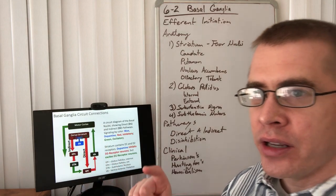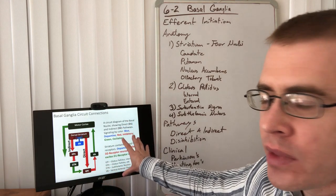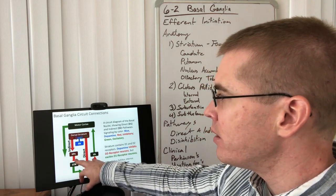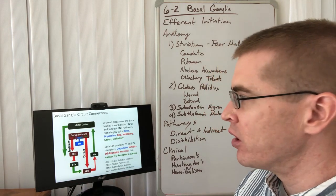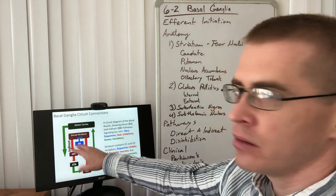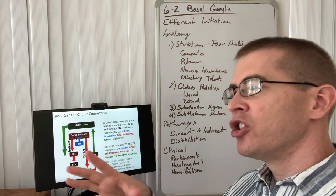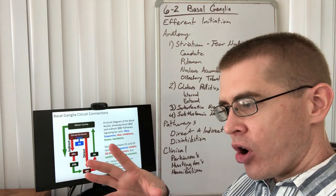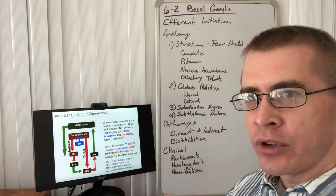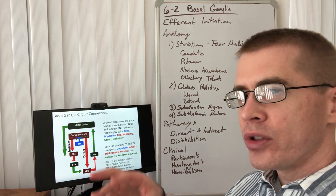Now we understand the nuclei and where they're located. Let's talk about how they're connected — the circuitry of the basal ganglia. Starting in the center, we have the dopaminergic substantia nigra pars compacta. The substantia nigra sends its projections to the dorsal striatum, to the putamen, where it arborizes with two populations of neurons: D1 and D2. These neurons are named because they contain the D1 family of receptors or the D2 family of receptors.